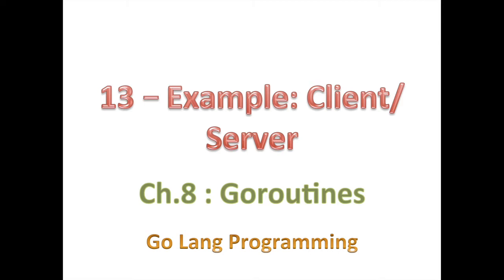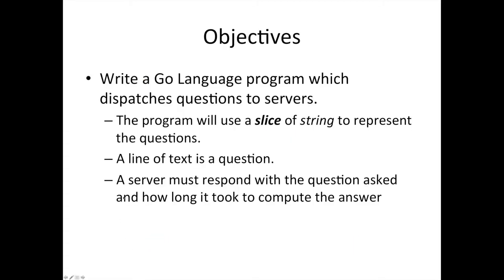What I want to look at now is sending channels on channels. This is one of many ways of doing things — there are a thousand different ways to do any one thing in programming. We're going to write a Go program that dispatches questions to a server. The program will use a slice of strings to represent questions, because we don't want to worry about reading from a file or over a network. A server must respond with the question asked and how long it took to compute the answer.